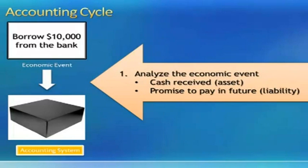We are receiving cash — cash is an asset. And we are promising to pay back in the future, and that promise to pay back in the future represents a liability. The first step in the accounting cycle is to analyze the economic event.